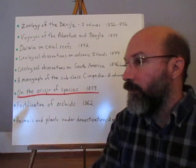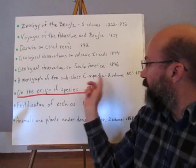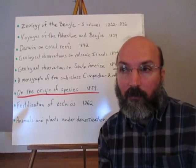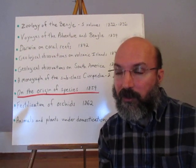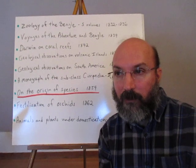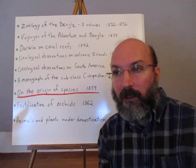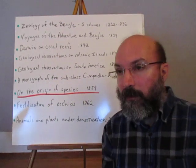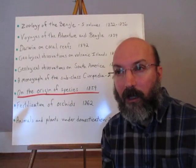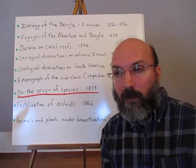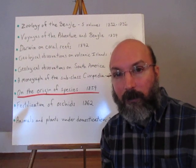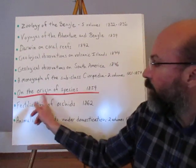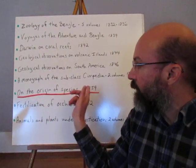Darwin wrote a monograph on barnacles, which was practically relevant in the era of wooden ships, as barnacles would eat holes in ships. But he was also doing this to learn as much as he could about zoology and what it took to truly understand anatomy and describe an organism. He spent a great deal of time before writing the Origin of Species collecting many notebooks full of observations and conducting his own experiments.